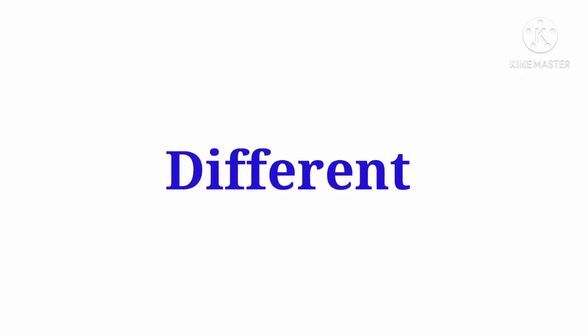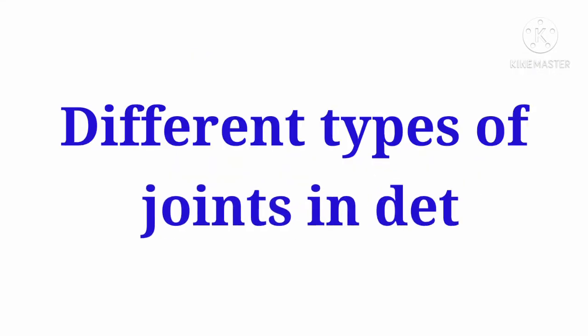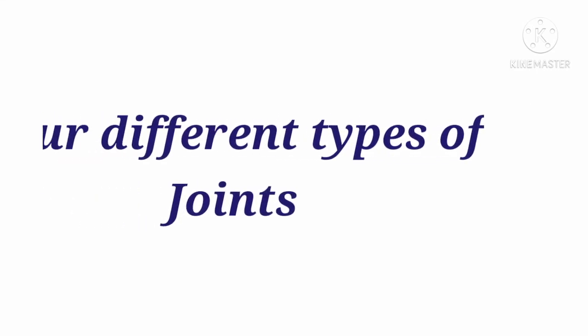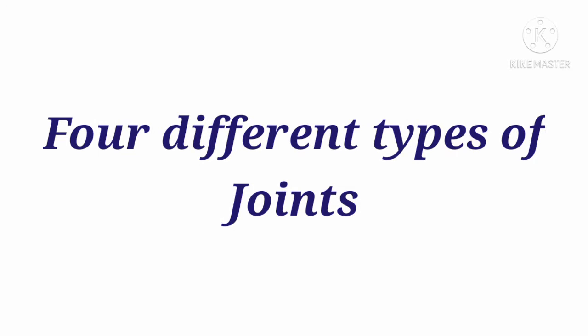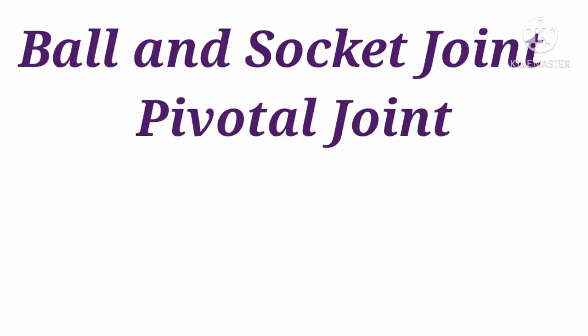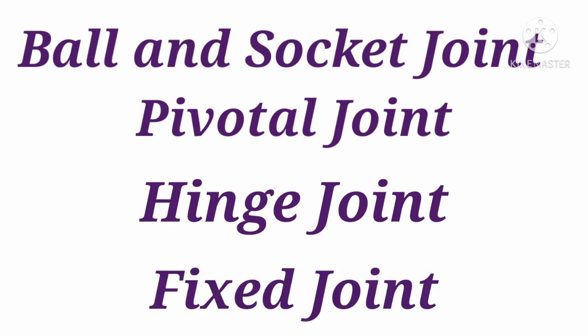Now let us study about different types of joints in detail. We are going to study four different types of joints. They are ball and socket joint, pivotal joint, hinge joint, and fixed joint.